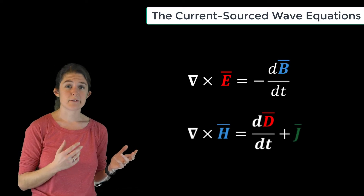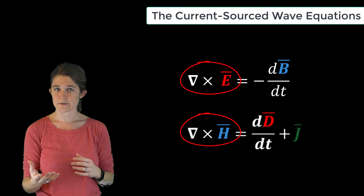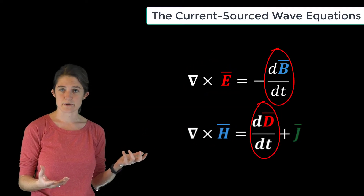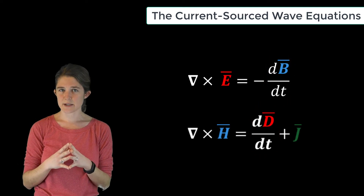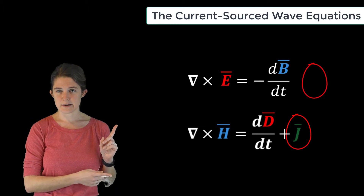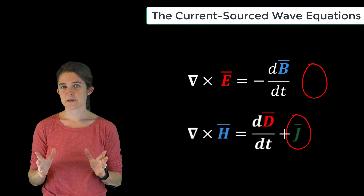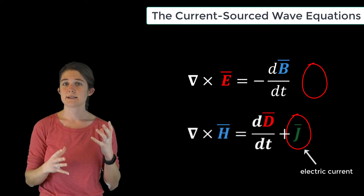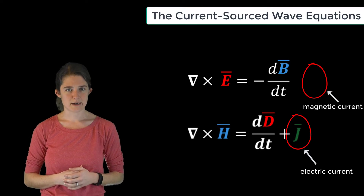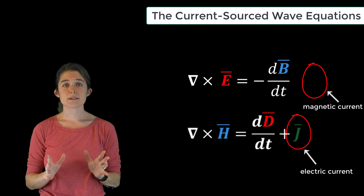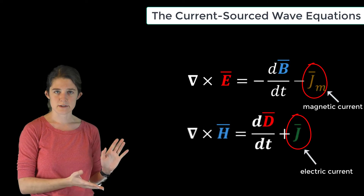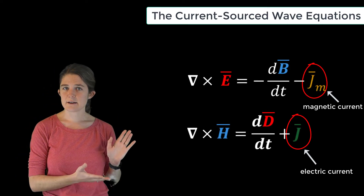These two laws are obviously very similar — they both relate the curl of one sort of field, either electric or magnetic, to the time derivative of the other sort of field. The only significant difference between these two equations is the presence of the current term in Ampere's law, which is not mirrored in Faraday's law. The reason for this mismatch is that while we do have and must account for electric currents, we do not have any such thing as a literal magnetic current.